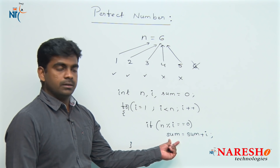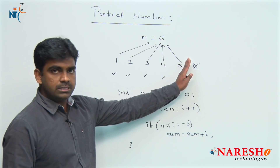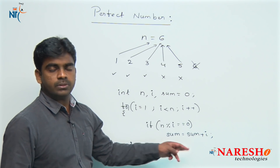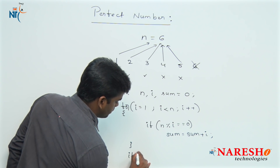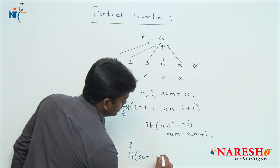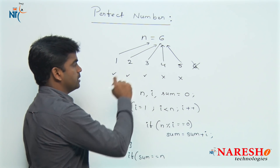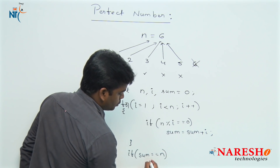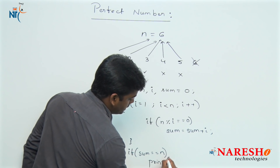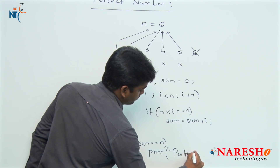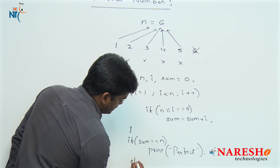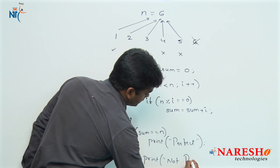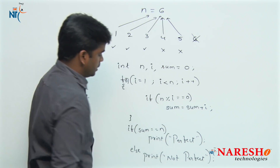If it is a factor, we add it. In our example with N=6, the loop runs up to 5, and factors 1, 2, 3 are added to sum. Finally, if sum equals N — here 1+2+3=6 equals N=6 — we print 'it is a perfect number', else we print 'it is not a perfect number'.